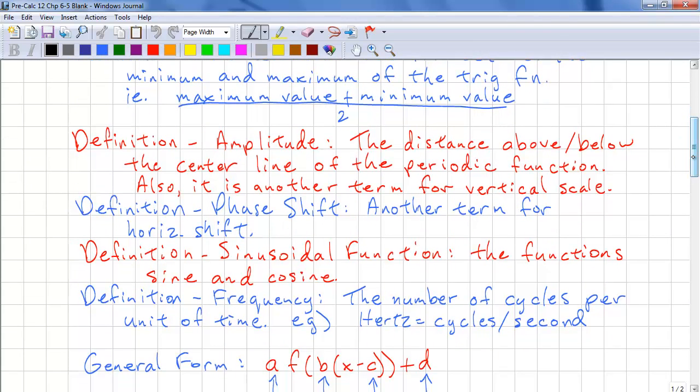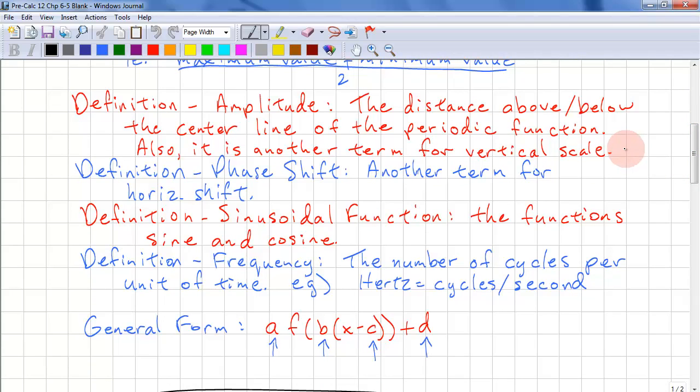Next definition is the amplitude. This is the distance above or below the center line, from the center line to the maximum or from the center line to the minimum. We can also call it what we've been previously calling the vertical scale.